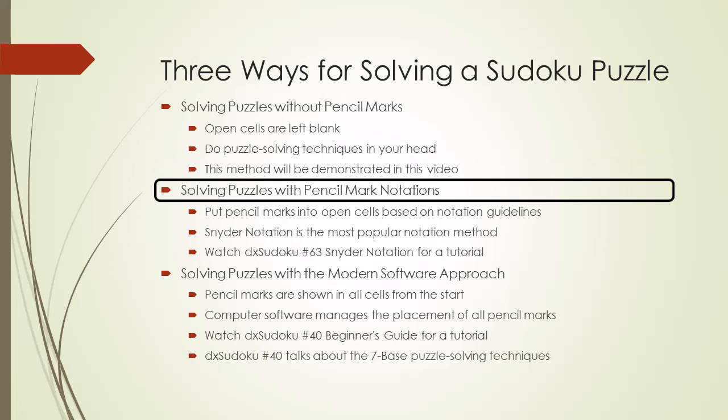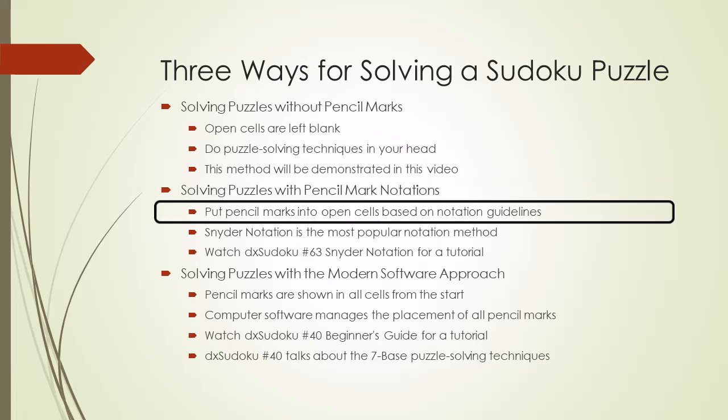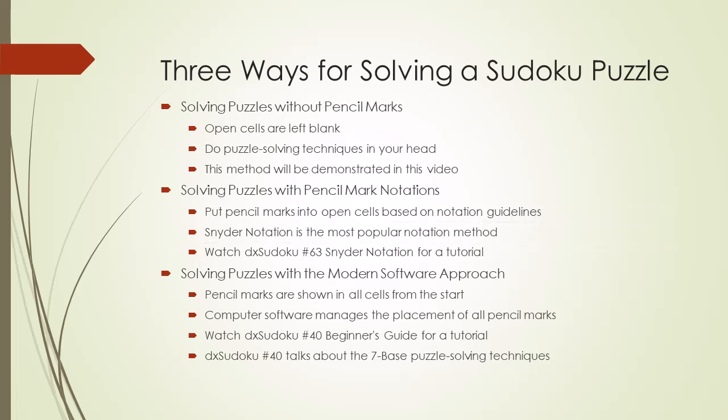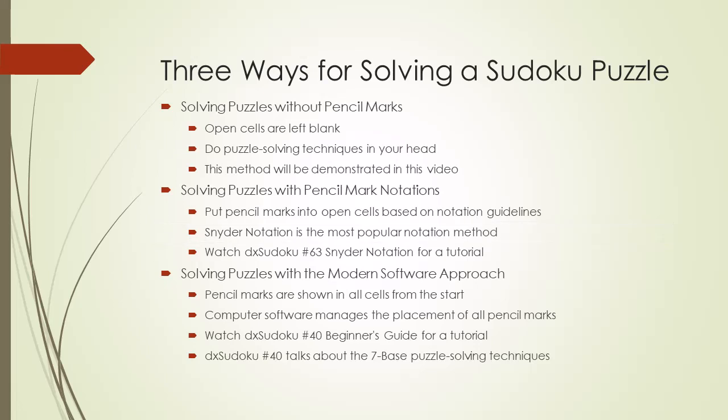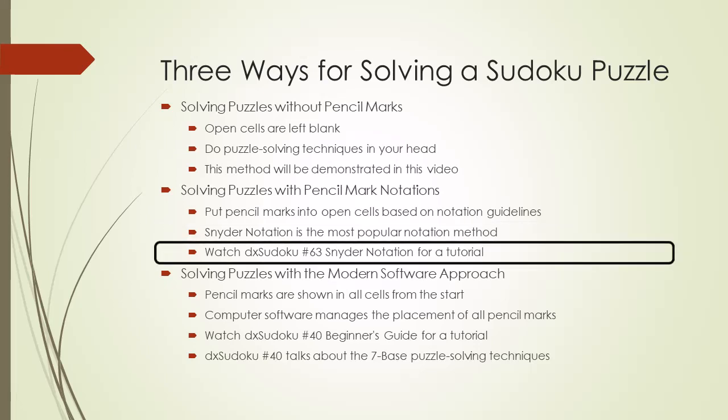The second way of solving a Sudoku puzzle is using a method of pencil mark notation. Pencil marks are put into open cells based on a set of notation guidelines. Snyder notation is the most popular method of pencil mark notation. If you are interested in learning Snyder notation, watch DX Sudoku video number 63 titled Snyder Notation.